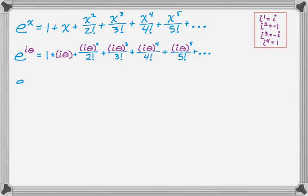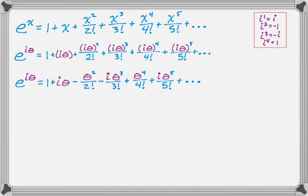So e to the i theta equals 1 plus i theta. i squared we said is negative 1, so it's going to be minus theta squared over 2 factorial. i cubed we said was negative i, so we're going to get minus i theta cubed over 3 factorial. i to the 4th is 1, so we just get plus theta to the 4th over 4 factorial. i to the 5th is back to i, so it's going to be plus i theta to the 5th over 5 factorial. Then we're going to do plus dot dot dot. So far so good.